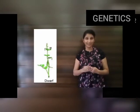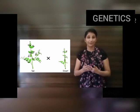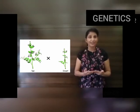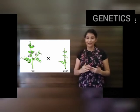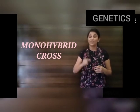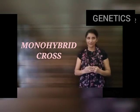Mendel conducted a cross between a true breeding tall plant and a true breeding dwarf plant. These two plants differ in a single character — the height of the plant. A cross in which organisms differ in only a single character is called a monohybrid cross. A monohybrid cross is a type of cross in which we study the inheritance of a single character.